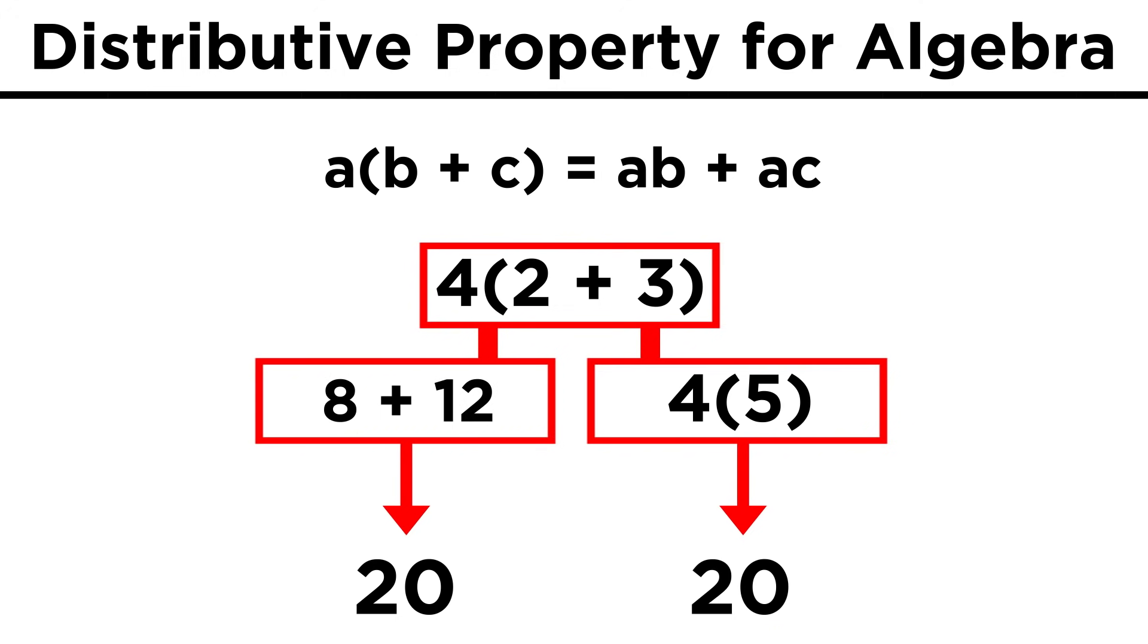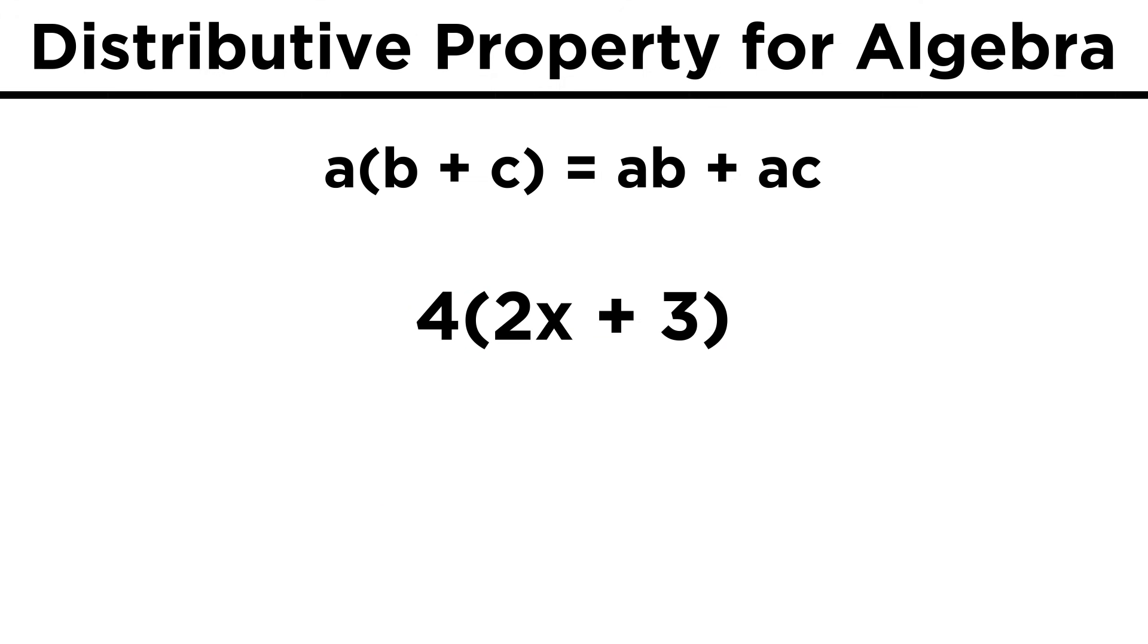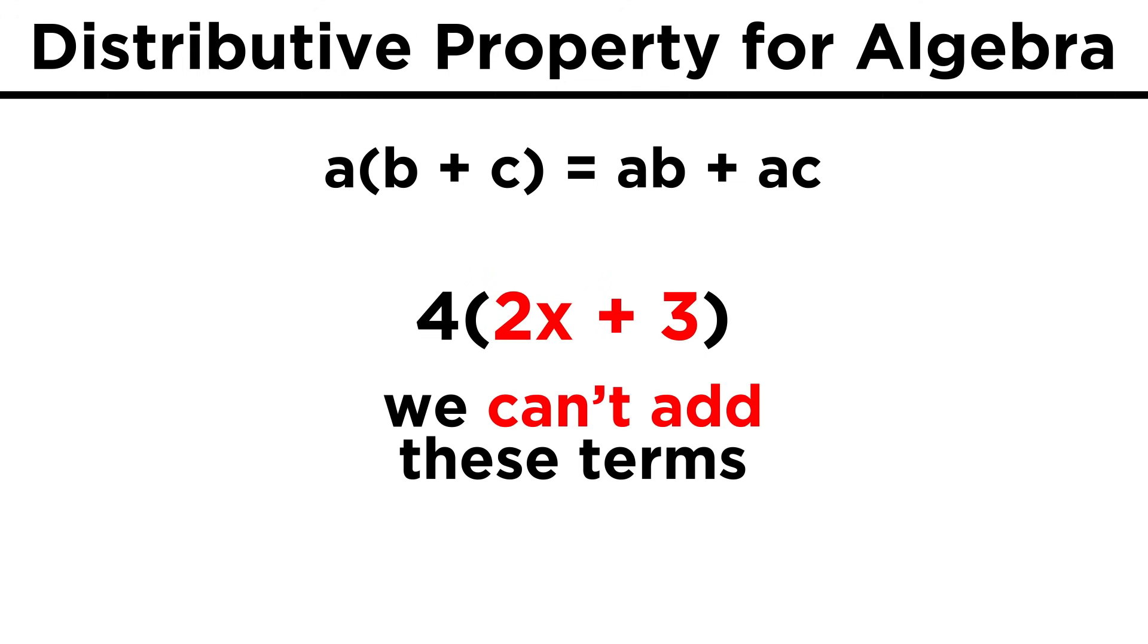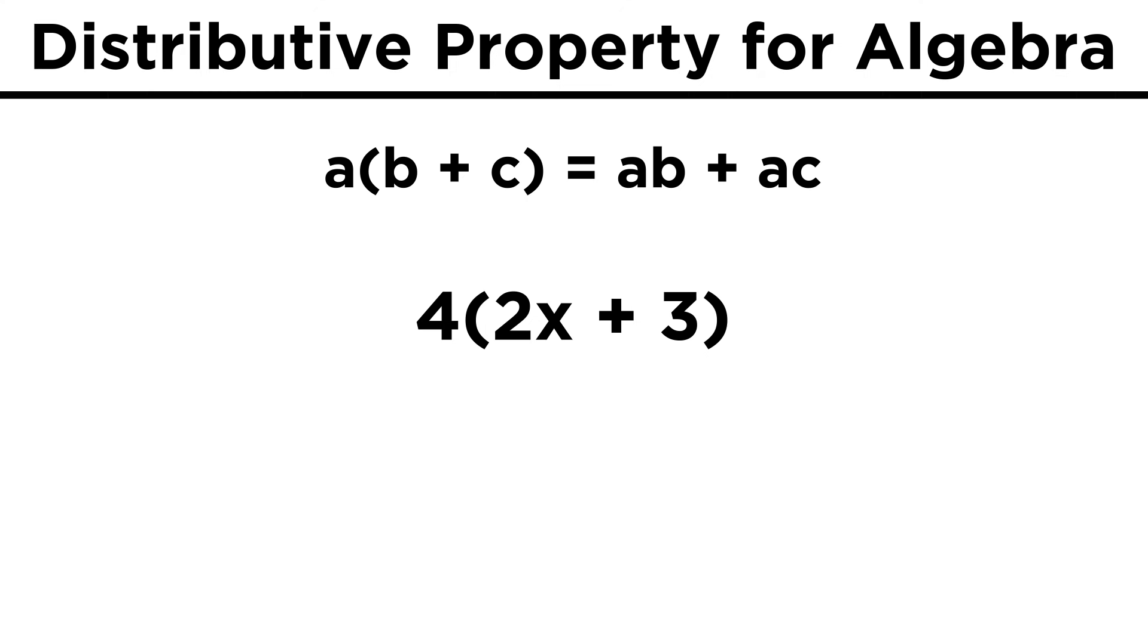We should get twenty no matter which method we choose. But with algebra, there are variables that must remain as they are, and can't be combined with numbers. So if we have four times the quantity of two x plus three, the only other meaningful way to express this is by distributing the four across the sum. That will give us four times two x plus four times three, which will simplify to eight x plus twelve.